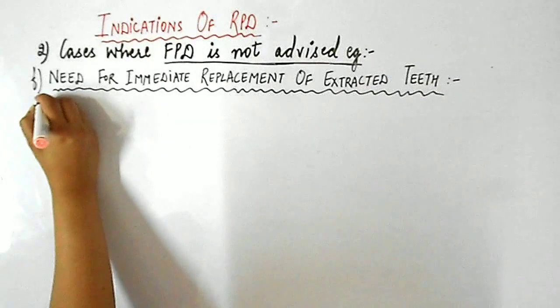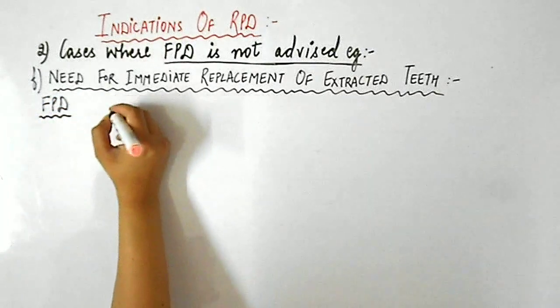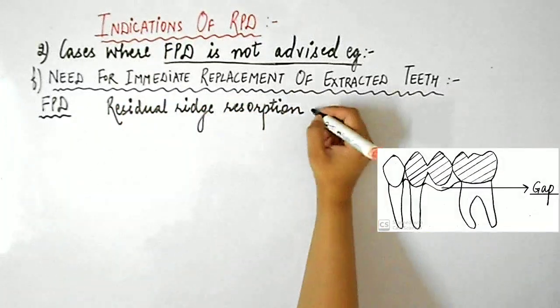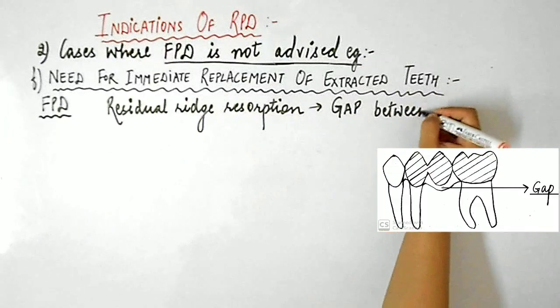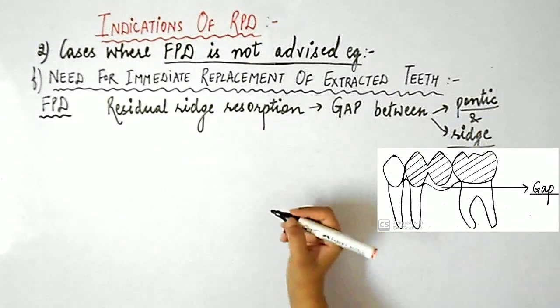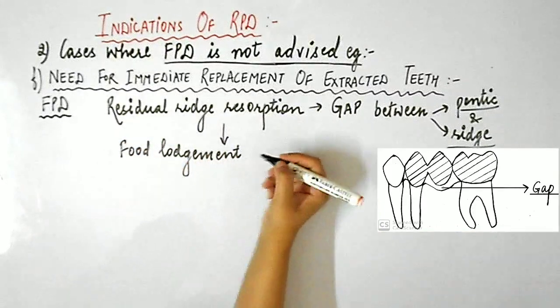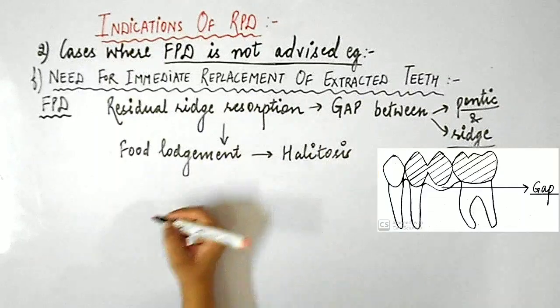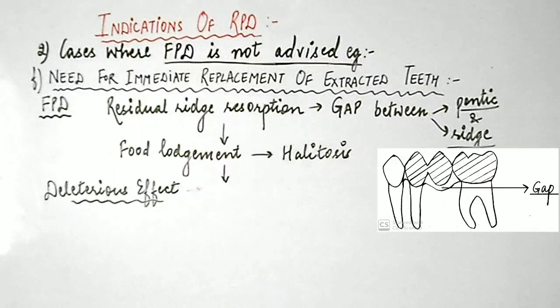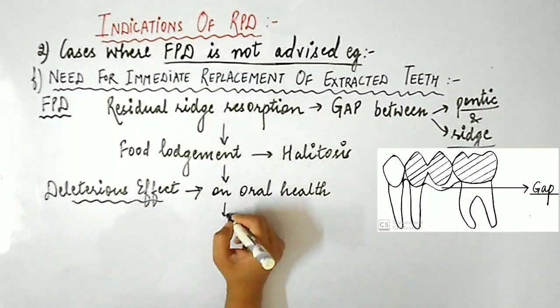Next is when there is need for immediate replacement of extracted teeth. If you give FPD in such a case for immediate replacement of extracted teeth, there will be residual ridge resorption at the extraction site, which will result in a gap below the pontic - that is, below the tissue surface of the pontic and ridge, as you can see in this diagram. This will become a potential site for food lodgment, resulting in halitosis and ultimately having a deleterious effect on oral health.